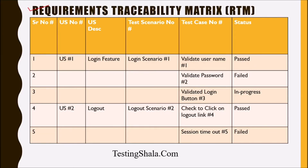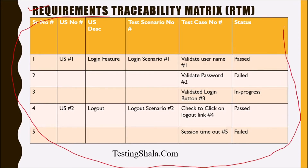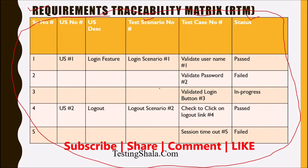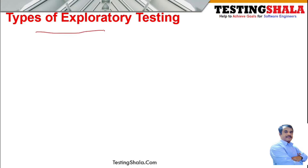A Requirements Traceability Matrix is put in a table format — from requirements gathering to writing test scenarios to test cases and their status. Everything is tracked in an Excel sheet or using test management tools to track all mappings, just to ensure that when signing off on a testing project we have enough coverage.